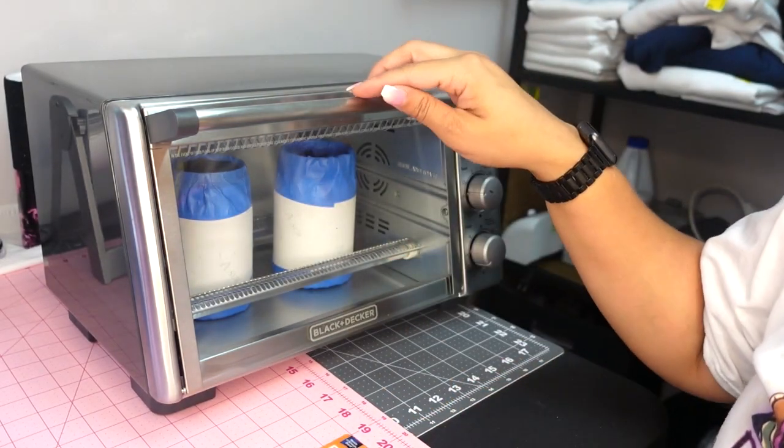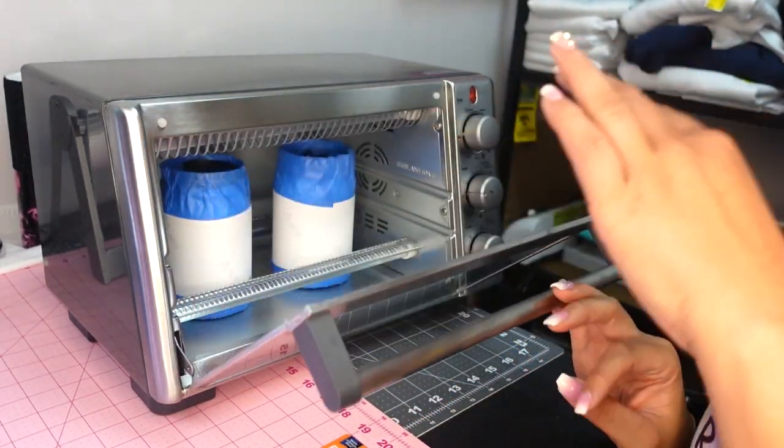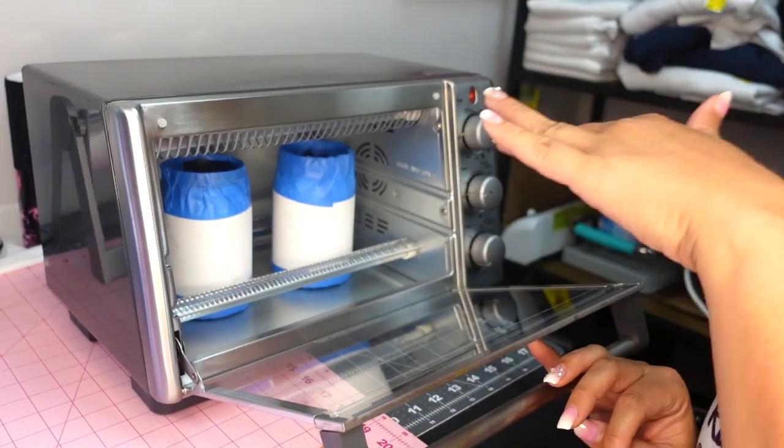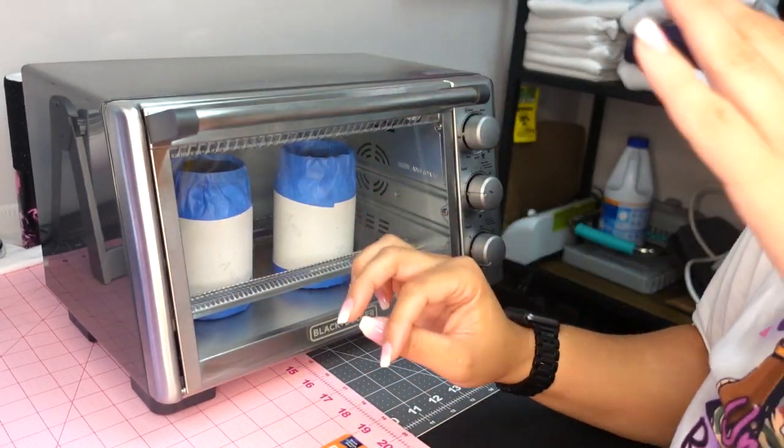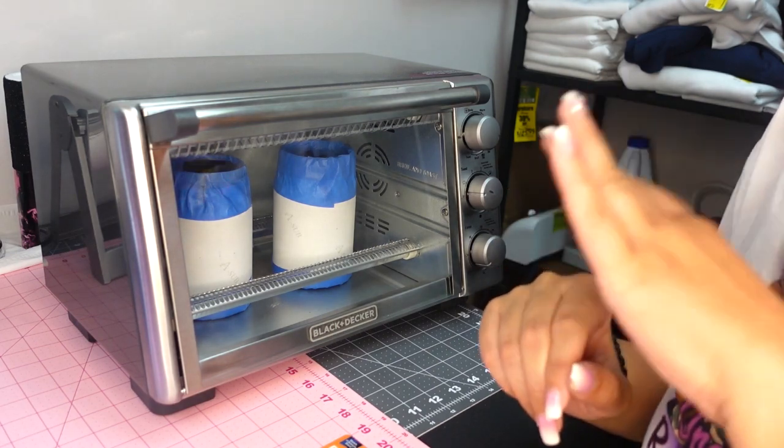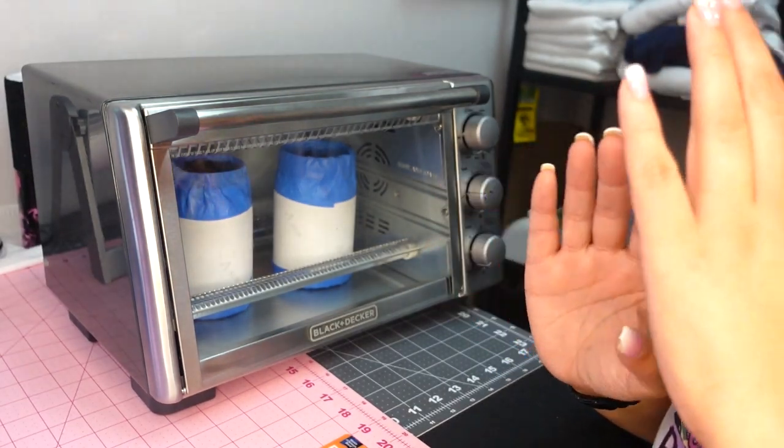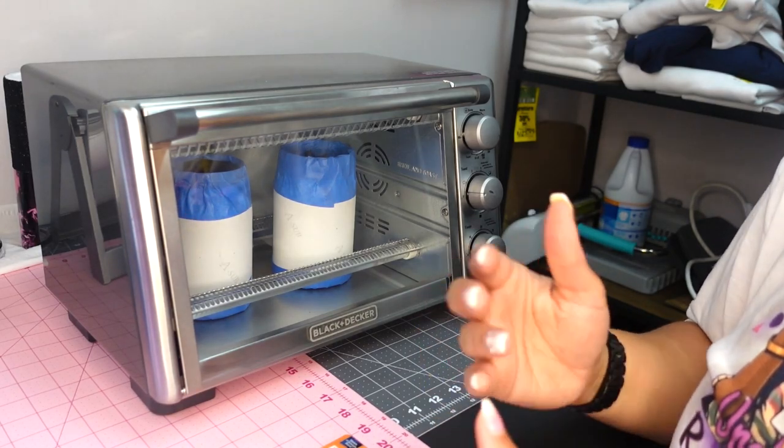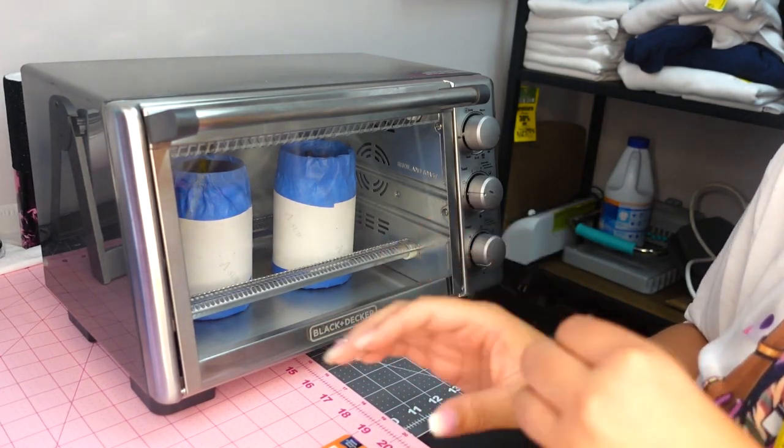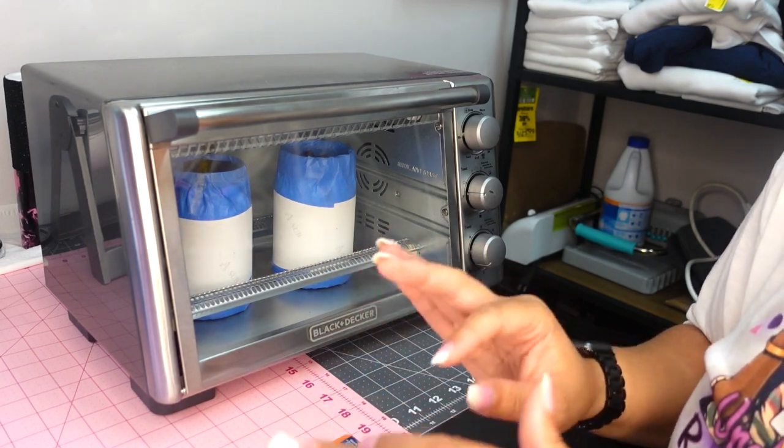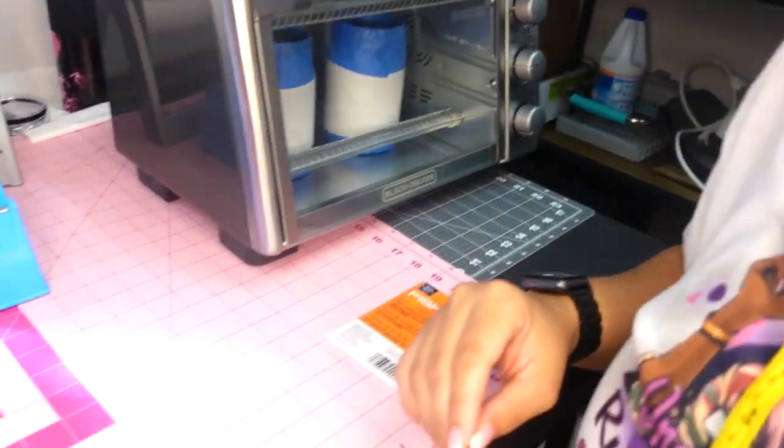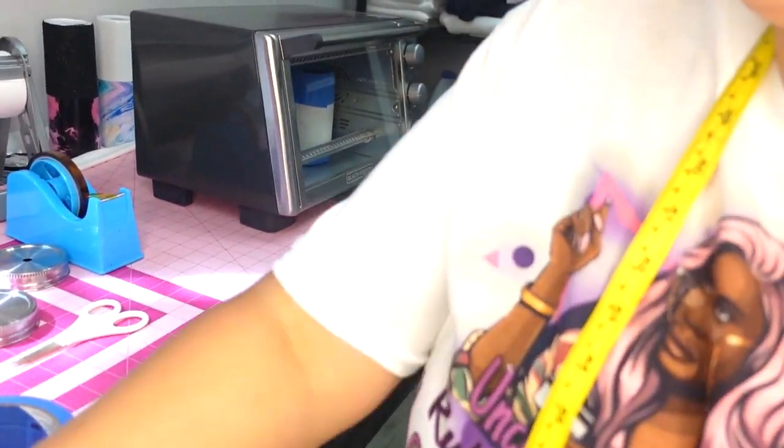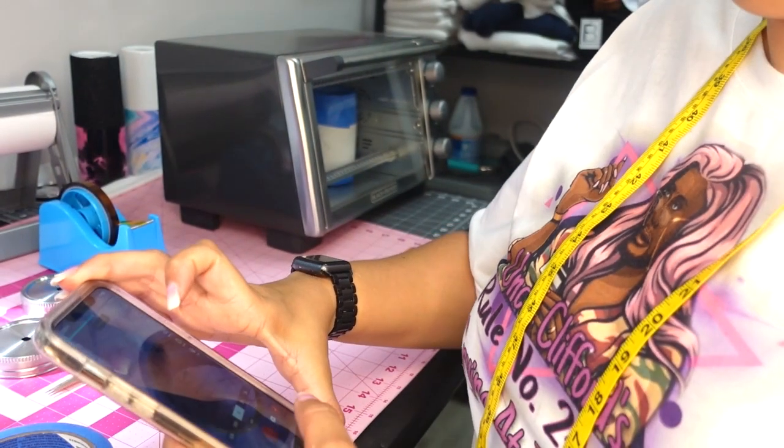I'm gonna let this go for I do six minutes total. So I'm gonna let this go for two minutes. I don't have to turn it because the tall tumblers I have to lay them down. These ones I don't, but I still want to open up the door because it gets so, so hot in there. So I'm gonna let it go for two minutes. I'm gonna open up the door for like 10 or 15 seconds, let a little bit of heat come out, go for two minutes, open up the door, and then let it go the final two minutes. So let me set my timer.